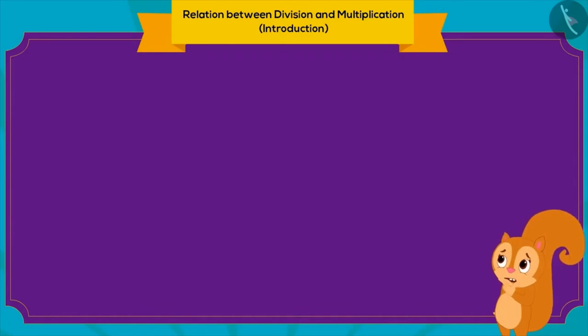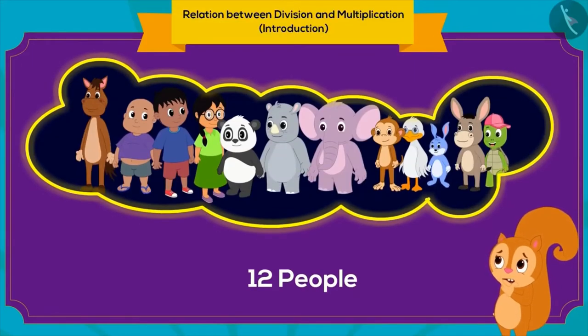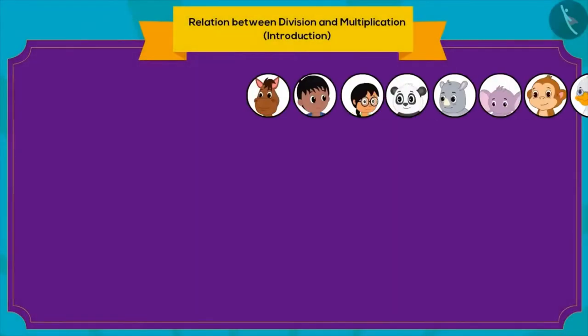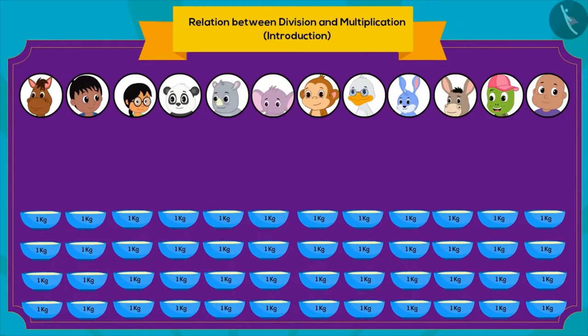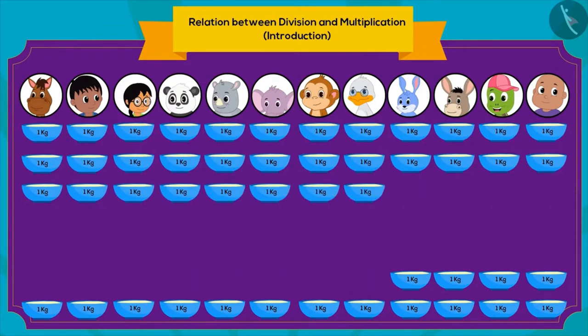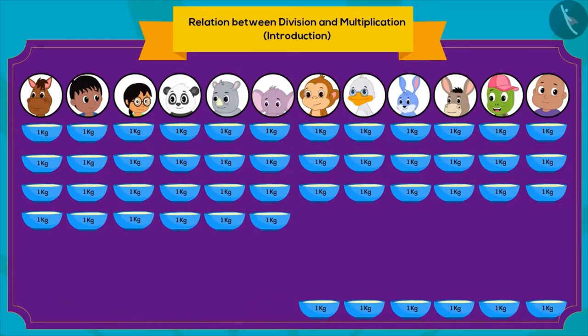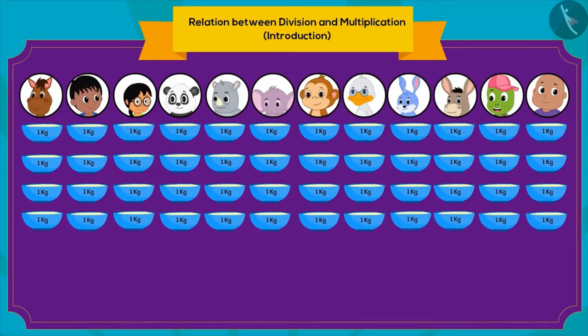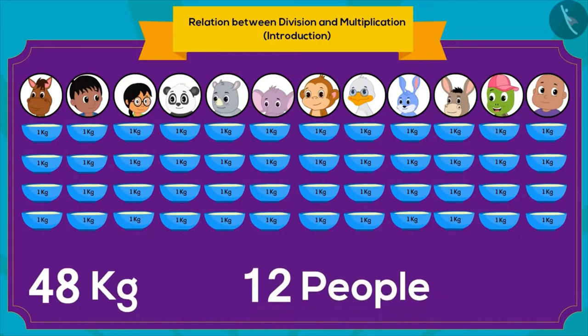Chanda needed to divide that kheer among 12 people in the village. Can you tell how much kheer each villager would get? Chanda will first give 2 kg of kheer to each individual. Then, she will give 1 kg more kheer to each of them. And finally, 1 more kg of kheer. This way, Chanda will divide 48 kg kheer equally among 12 people.